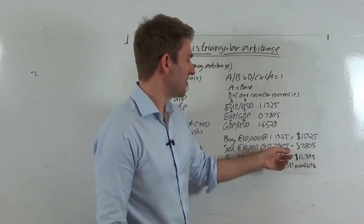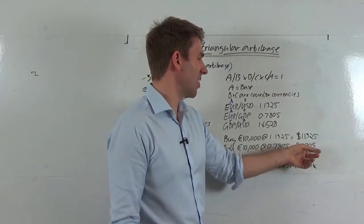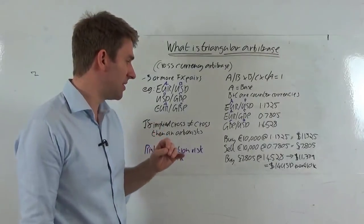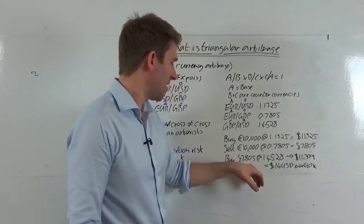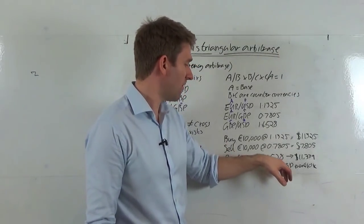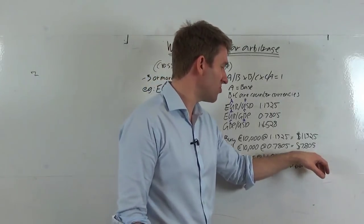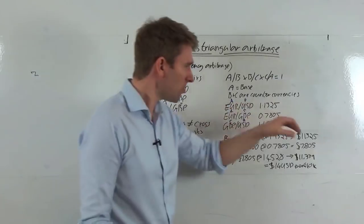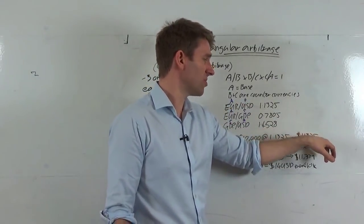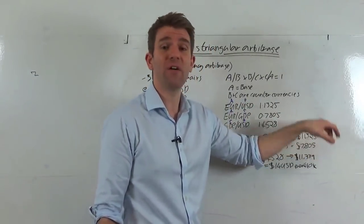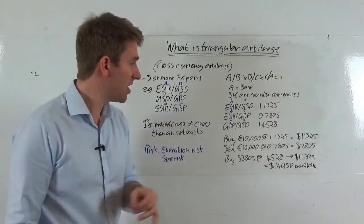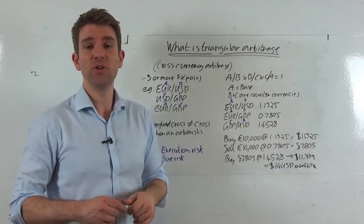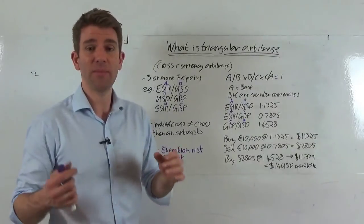But we then use those pounds and we buy £7,805 at 1.4528 to give us $11,339, which is $14 higher or more than $11,325 in our initial trade, giving us a $14 profit per 10,000 euro trade, giving us an arbitrage opportunity.